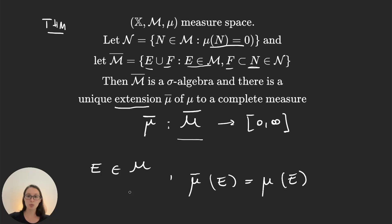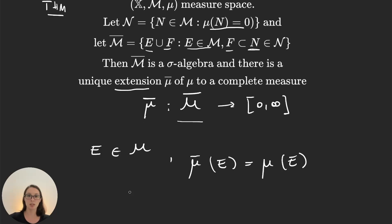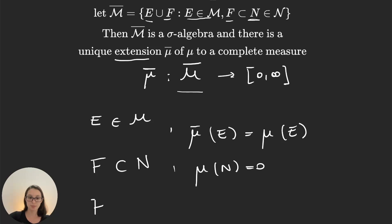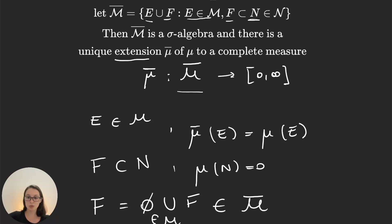Now what happens when you have, for example, a subset of a set of measure 0? Let's say F is a subset of n, where n is a set with measure 0. Then we can write F as the empty set union F. The empty set is an element in our original sigma algebra, and F is a subset of n with measure 0. So any subset of a set of measure 0 can be written in this way, and therefore belongs to M̄ — the new sigma algebra — and is measurable with the new measure mu bar.